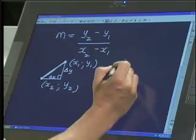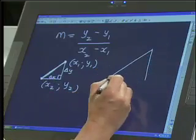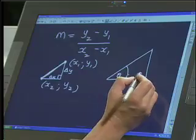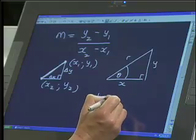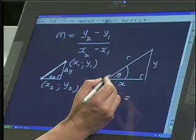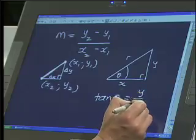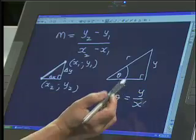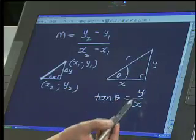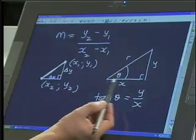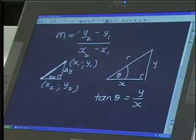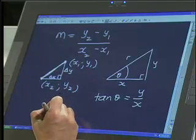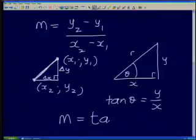But if you have this triangle, then from our triangle in trigonometry, what is tan theta? Tan theta is exactly by definition y over x, so we're basically taking y over x, change in y, change in x, and we're doing the exact same thing as what we do for gradient.